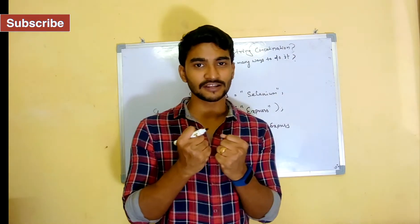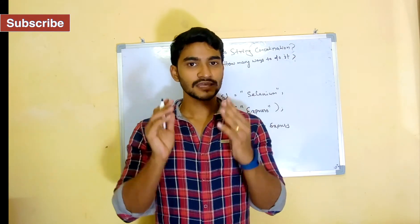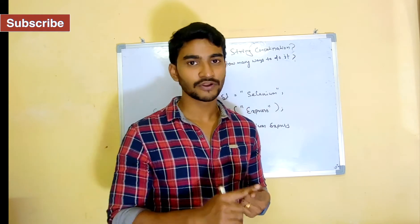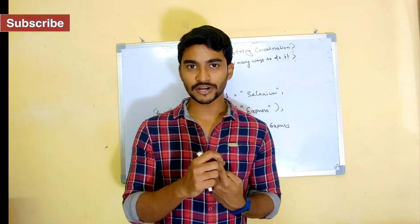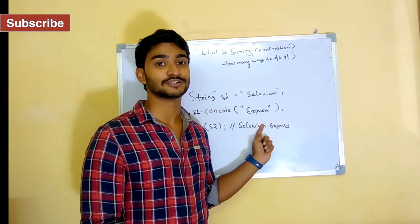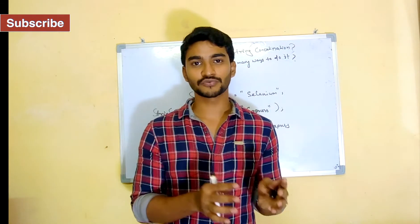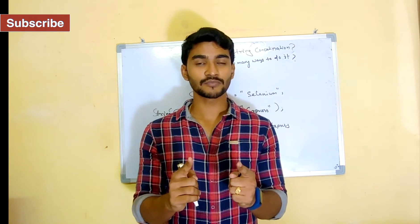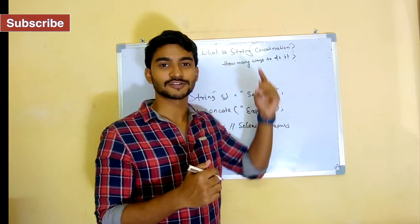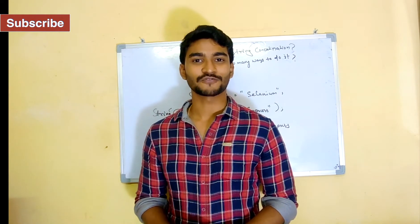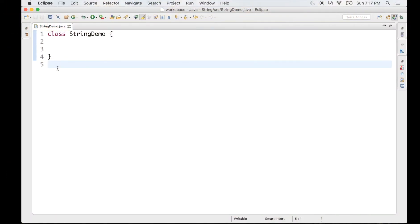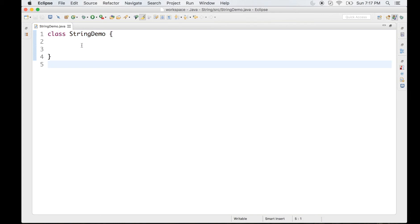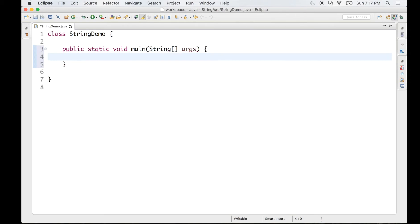Now let's cover it programmatically in Eclipse. In this tutorial we have covered two ways to do concatenation in Java: first, by using the plus operator; second, by using the concat method of the String class. We also covered what concatenation is. So let's bring Eclipse into the picture. I have a simple class called StringDemo with no code yet, and I'm going to write everything from scratch using the main method.